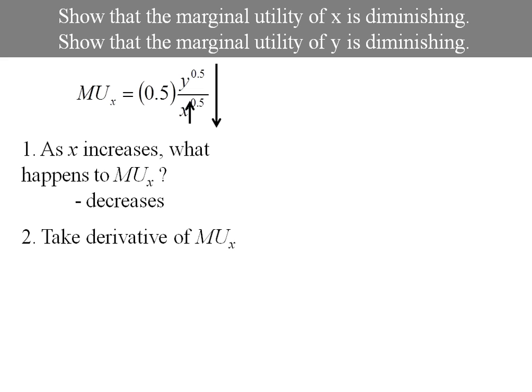Another way of showing this would be to take the derivative of the marginal utility of x and see that it's negative. Well if I take that derivative it'll be negative 0.5 times 0.5 times x to the negative 1.5 y to the 0.5. Well this is obviously less than 0 because that negative is out in front. So I could either show just by using arrows and looking at it, or I can take the derivative of marginal utility. Let's do the same thing for y.